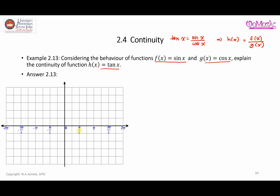Those key x-values are: 0, π/2, π, 3π/2, and 2π. Similarly, we have the same values on the negative side of the x-axis, just that they are all negative.